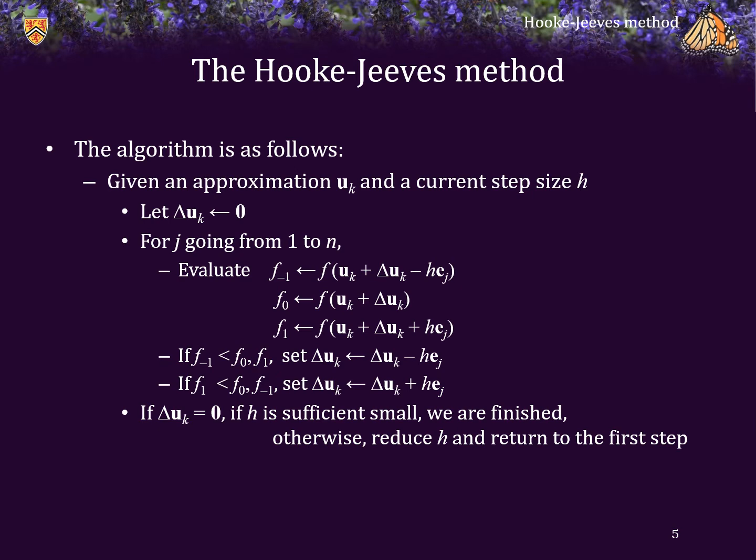Now, if after going through all n dimensions delta u sub k is still equal to the zero vector, then that means that the midpoint is the smallest of all the 2n other points we tested. Consequently, if h is small enough, we are finished — we have found an approximation of the minimum. Otherwise, we will reduce the value of h and return to that first step again.